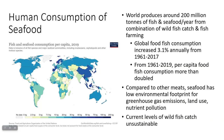The world produces about 200 million tons of fish and seafood per year. This comes from a combination of two things: wild fish catch, which is what we're going to talk about in this lesson, and fish farming — otherwise known as aquaculture — which will be covered in the next lesson.